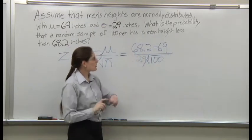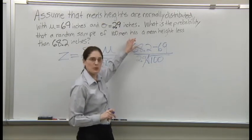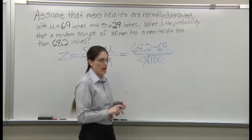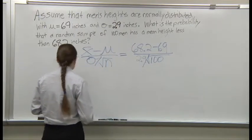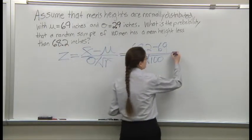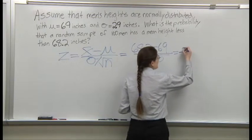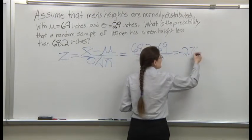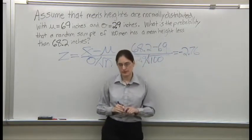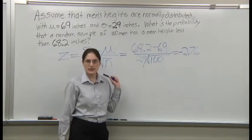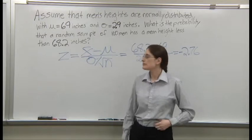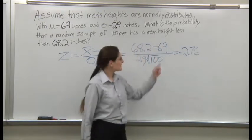Remember, if you punch it into your calculator, put the whole top in parentheses and the whole bottom in parentheses. It should work out to negative 2.76. That's a Z. So we got a Z score.